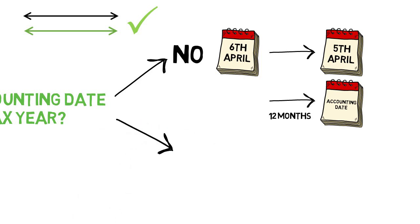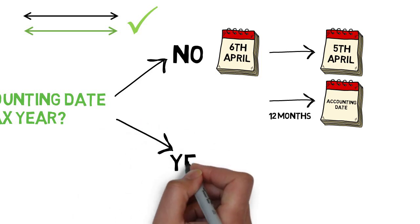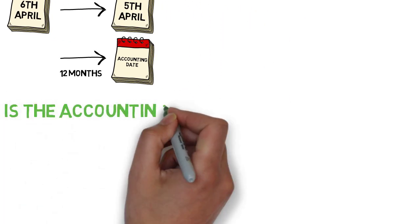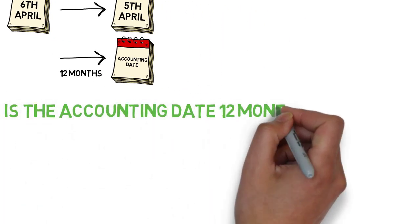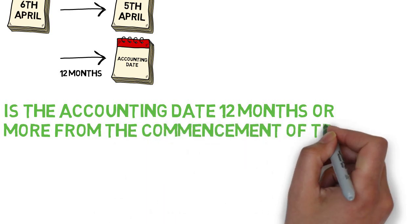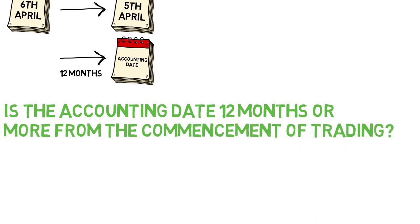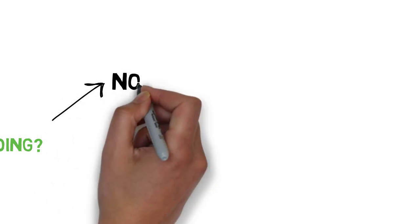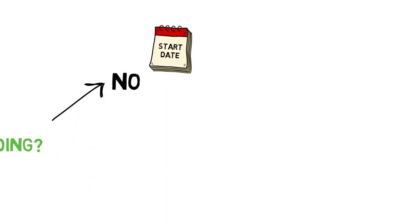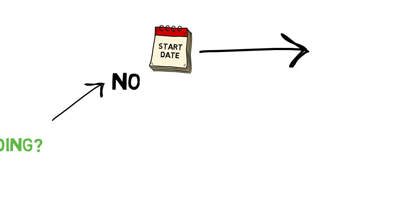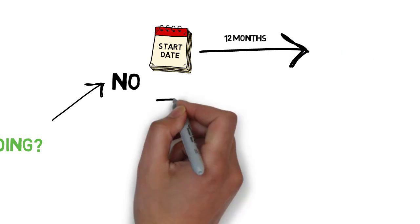If there is an accounting date in that second tax year, then a second question must be answered: is the accounting date 12 months or more from the commencement of trading? If it isn't, then the basis period is 12 months from the start of the business, and subsequent basis periods will fall in line with your accounting year.